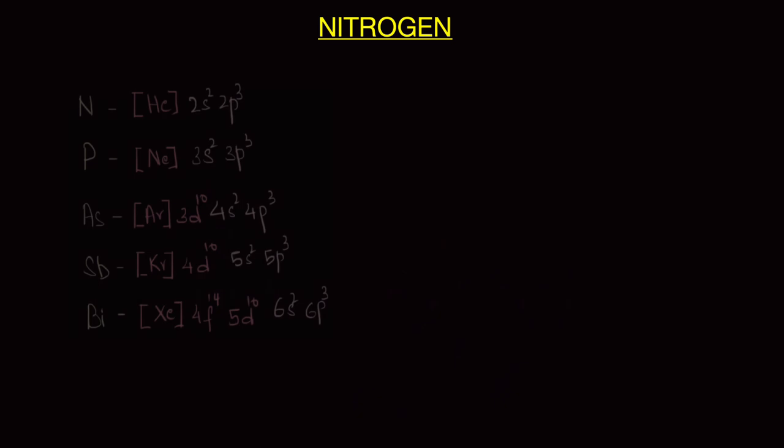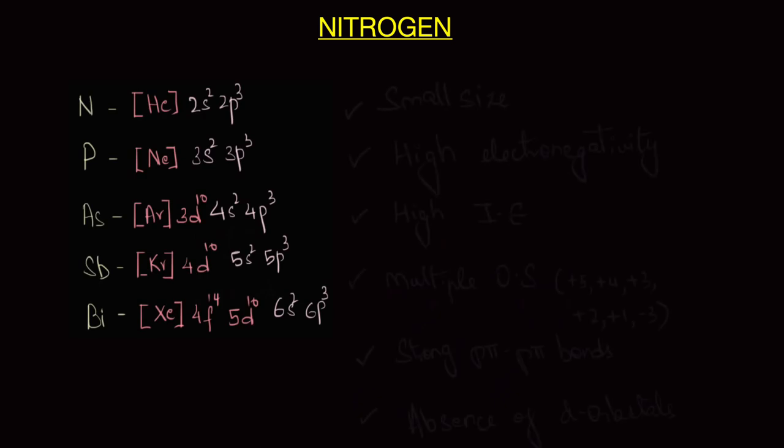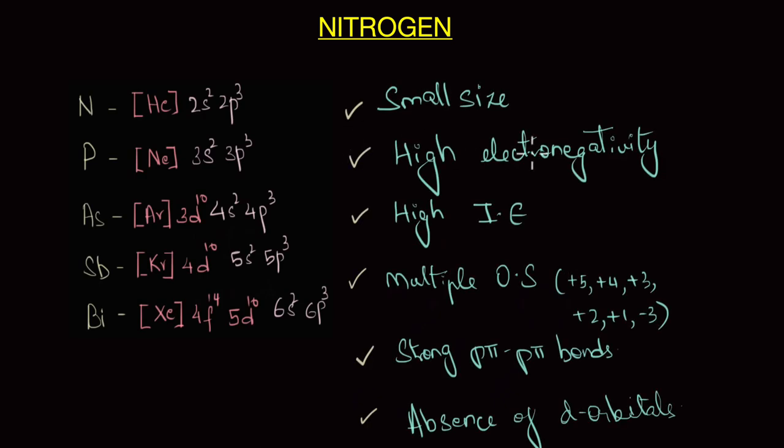Now coming to the chemistry of nitrogen, nitrogen differs from the rest of the members in a number of ways such as it has small size, high electronegativity, high ionization enthalpy, exhibits multiple oxidation states and it has the unique ability to form strong p pi p pi bonds and also compared to the others, nitrogen has no empty d orbitals available.